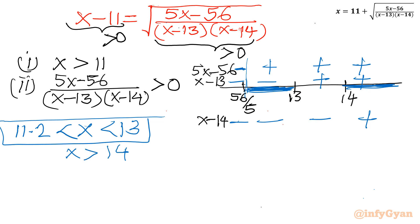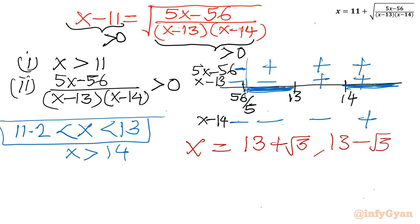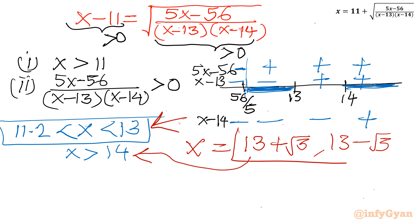So writing our solutions: 13 plus root 3 will be approximately 14.732, which lies in the interval greater than 14. And 13 minus root 3 will be approximately 11.268, which lies in the interval (11.2, 13). So both solutions are valid and true.